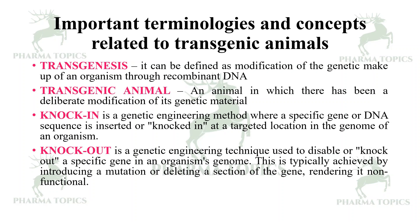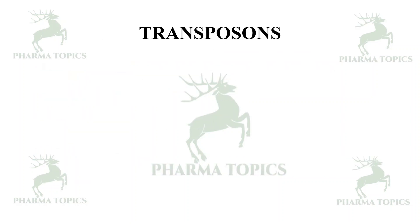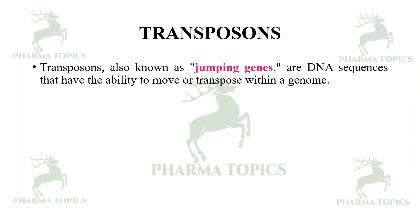Knockout is a genetic engineering technique used to disable or knock out a specific gene in an organism's genome through deletion. This is typically achieved by introducing a mutation or deletion of a section of a gene, rendering it non-functional. Now let us see what are transposons.